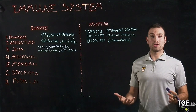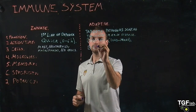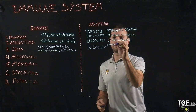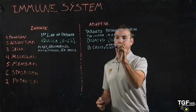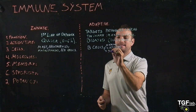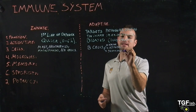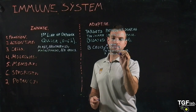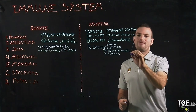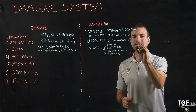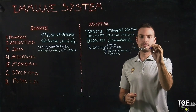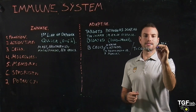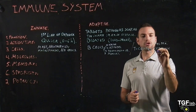In the adaptive immune system, we have different types of cells. We have B cells, which can be naive, activated, plasma cells, or memory B cells. The plasma cells are going to produce antibodies. In addition to B cells, we also have T cells, which can be helper T cells, cytotoxic T cells, or memory T cells.